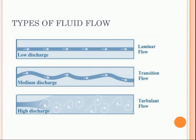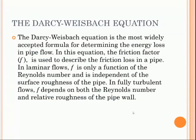The Reynolds number is a parameter for predicting whether the flow condition will be laminar or turbulent. The Darcy-Weisbach equation is the most widely accepted formula for determining energy loss in pipe flow — it is an empirical equation relating to head loss or pressure loss. It contains a dimensionless friction factor, also known as the flow coefficient or resistance coefficient. This friction factor is not a constant; it depends on the characteristics of the pipe, the characteristics of the fluid, and the velocity of the fluid flow.